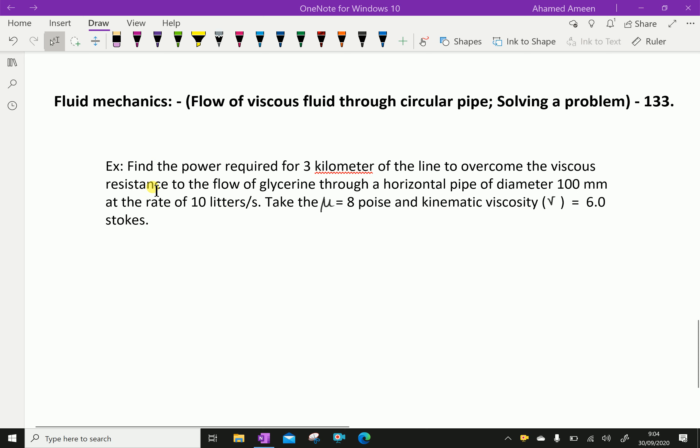Find the power required for 3 km of the line to overcome the viscous resistance to flow of glycerin through a horizontal pipe of diameter 100 mm at the rate of 10 liters per second. Take mu equal 8 poise and kinematic viscosity equal 6 stokes.